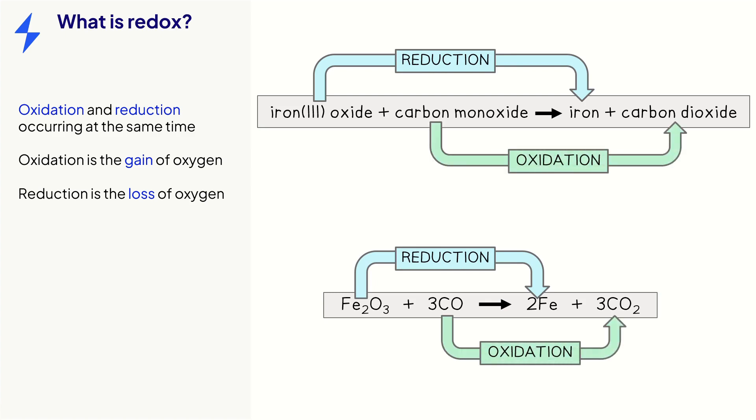Remember that the oxidation number of a transition metal can be determined by looking at the Roman numerals. So in this example, iron in iron oxide has the oxidation number plus 3.